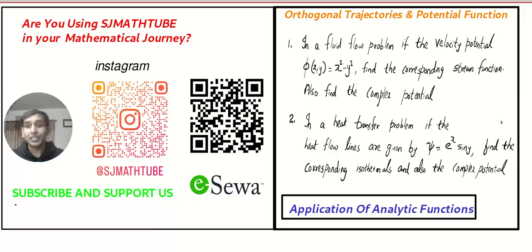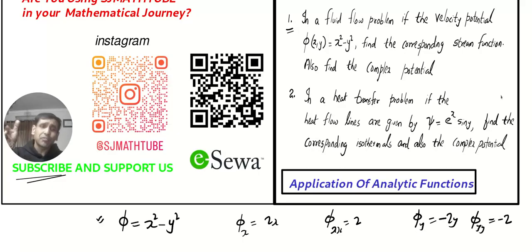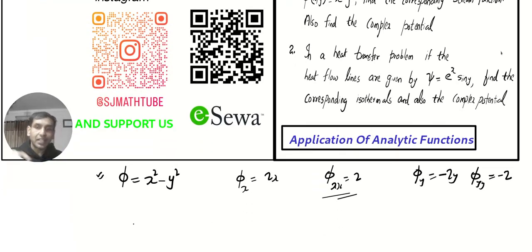Let's do one problem very quickly. If you are using SJMathTube, don't forget, subscribe and support. Let's do the first question. So, what is given? Phi is given x squared minus y squared. You can prove that this function is harmonic. And if it is harmonic, we can find the harmonic conjugate. So, phi_x is equal to 2x. Phi_xx will be 2. Phi_y is equal to minus 2y. Phi_yy is equal to minus 2. We did tough questions. So, this is going to be super easy. Now, look at this. I will say, the given function is harmonic. It means it balances the Laplace equation. That is, phi_xx plus phi_yy equal to 0. One warning. Don't watch this video without watching the last two videos. It's a continuation.